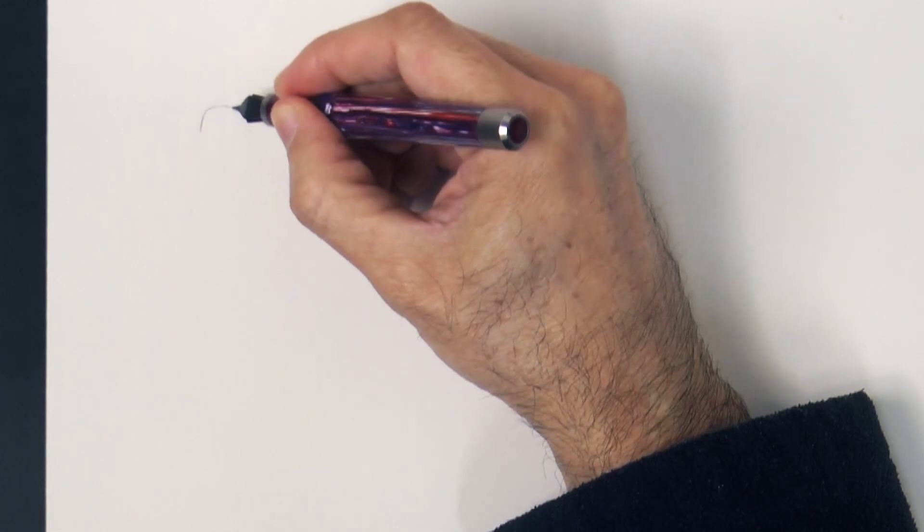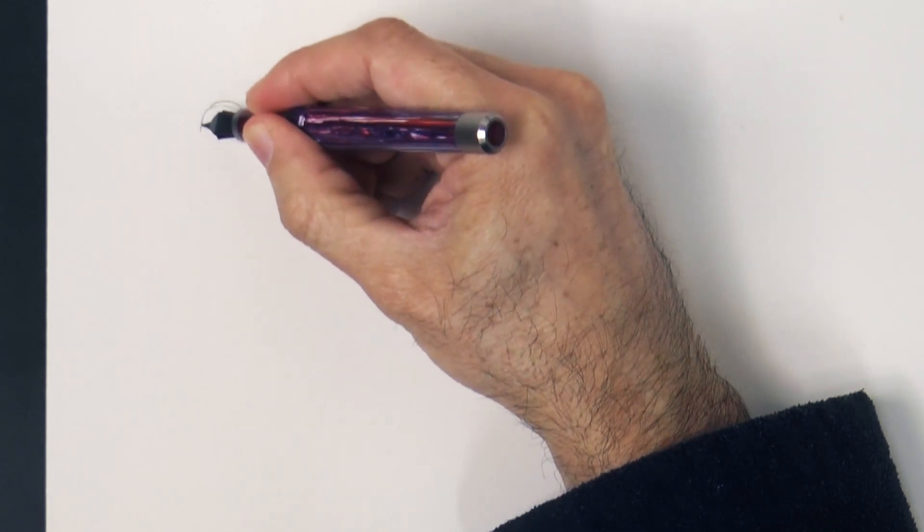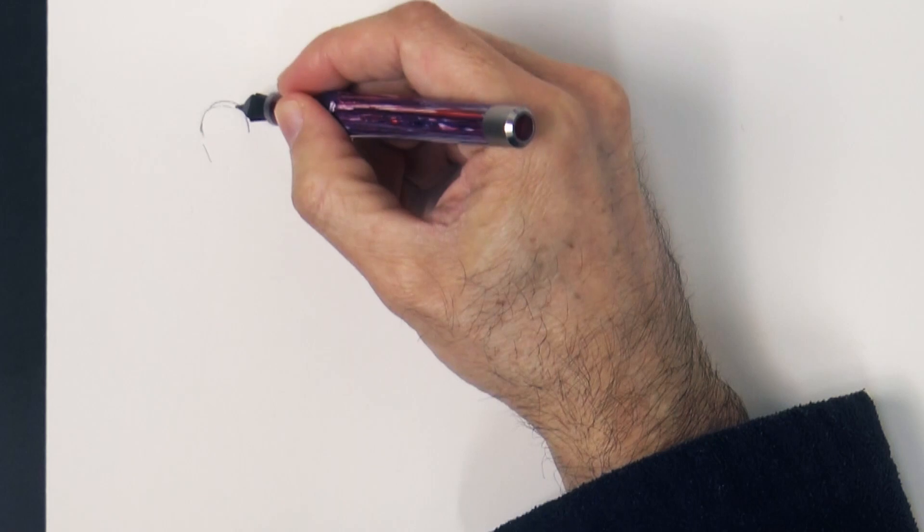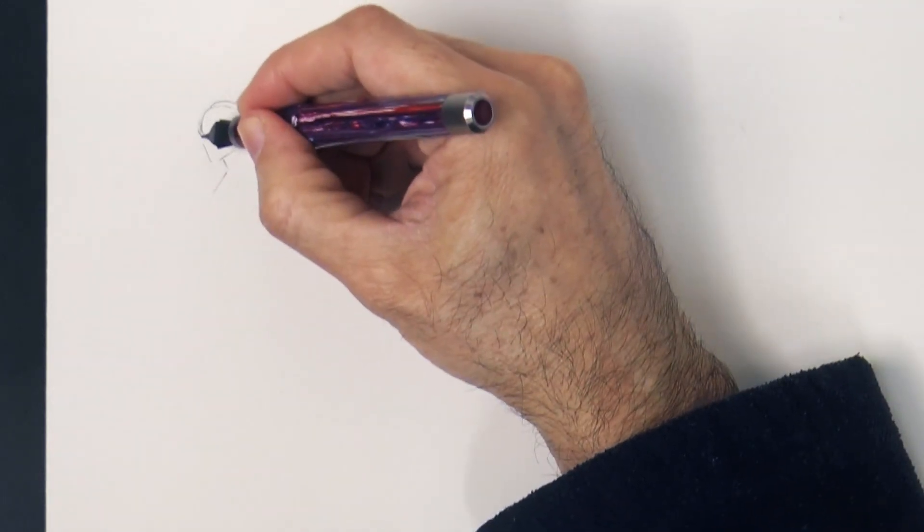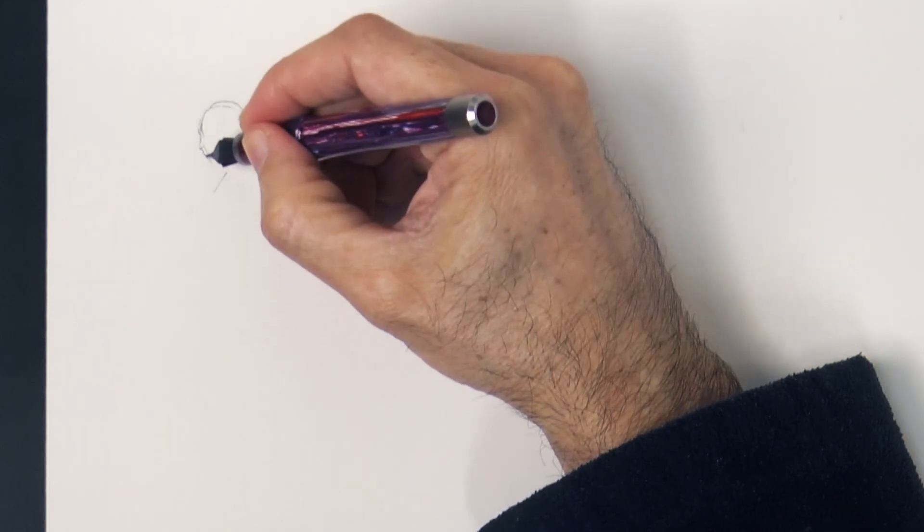We begin with the shape of the head, a line for the face and the jaw, then the neck. After that let's do the nose and the mouth.